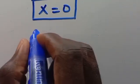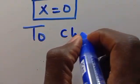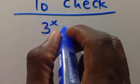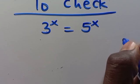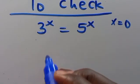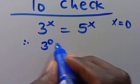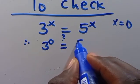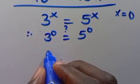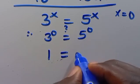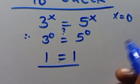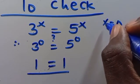Let's check: when we have 2 to the power of x equals 5 to the power of x and we get x equals 0, we take 2 to the power of 0, which gives 1, and it equals 5 to the power of 0, which is also 1. Seeing the left-hand side equals the right-hand side, this implies x equals 0 is correct.